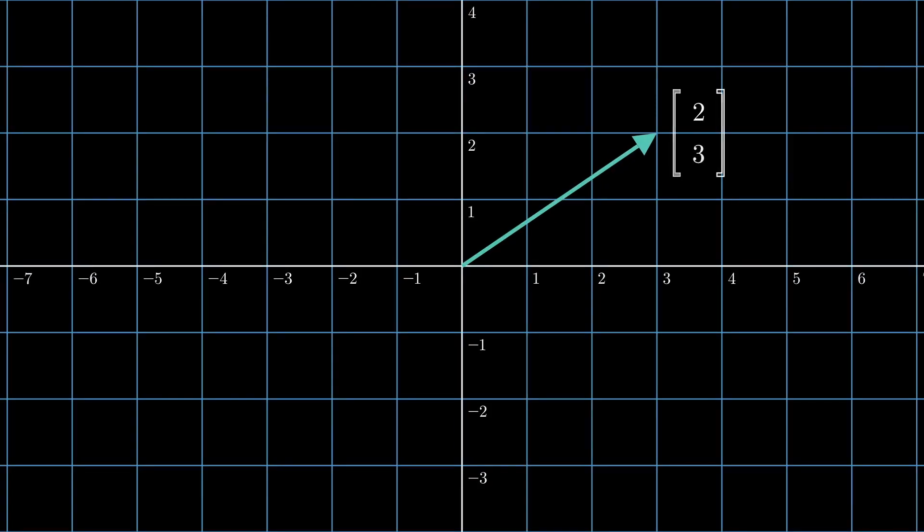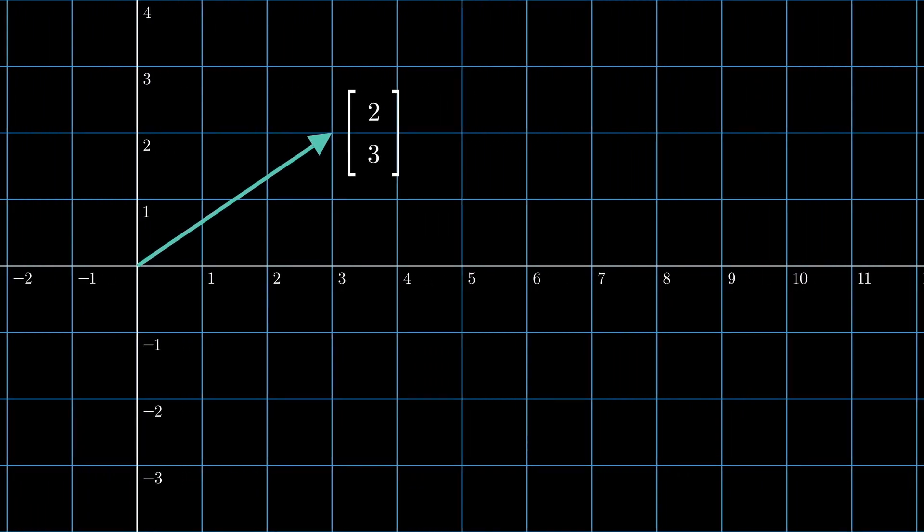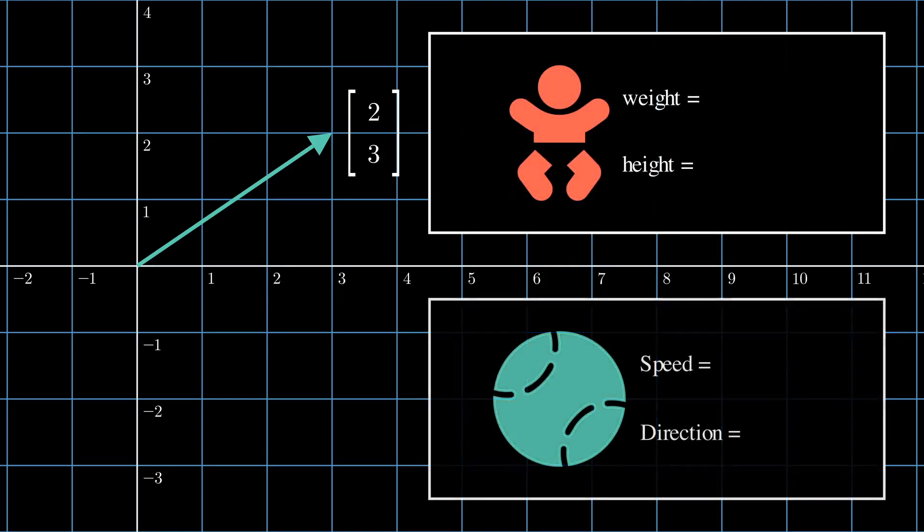Just like vectors are fundamentally a mathematical concept that is used to describe all kinds of data, such as a baby's weight and height or a ball's speed and direction, random variables are a mathematical concept that can be used to describe the behavior of all kinds of phenomena.